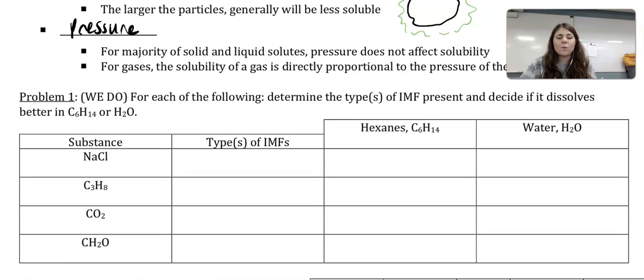So we're going to do this together. First we're going to identify the intermolecular forces present, and then decide when it comes to hexane and water which one is going to dissolve the substance better. NaCl is going to have ionic intermolecular forces because it's inter, not intra.